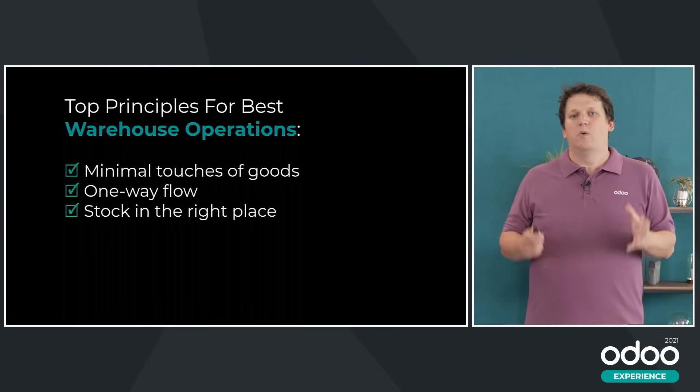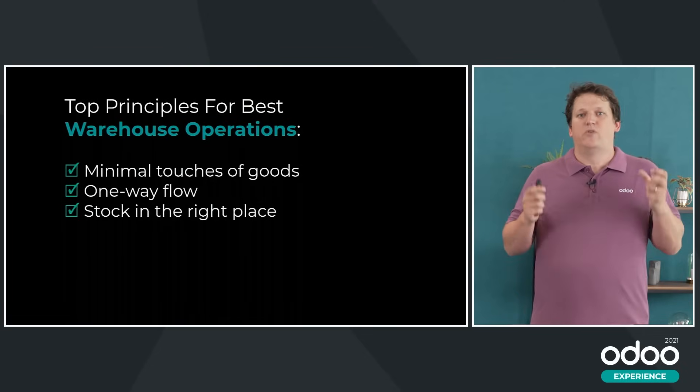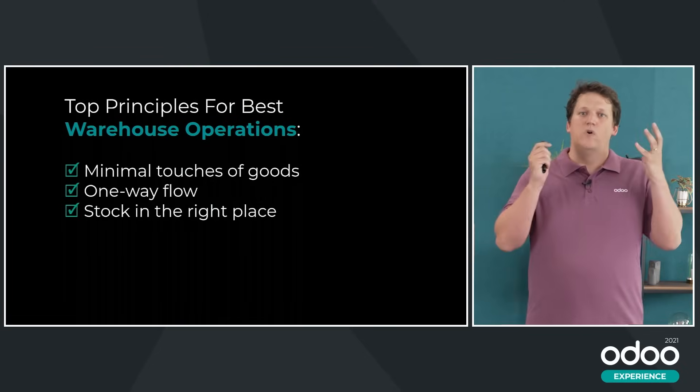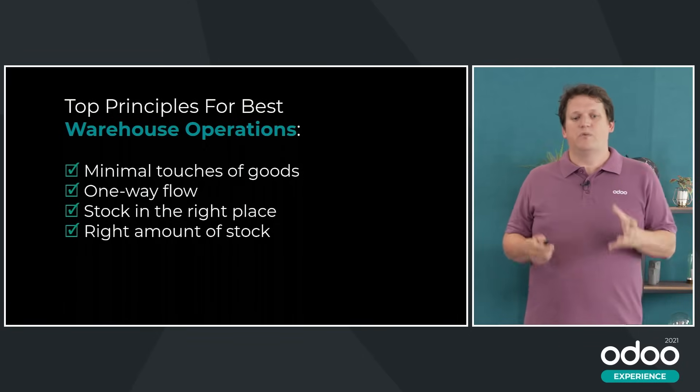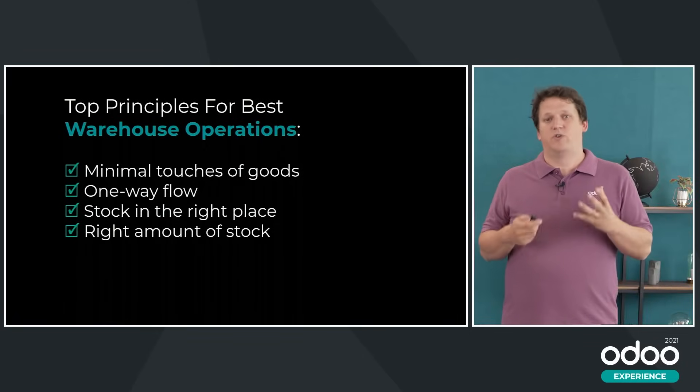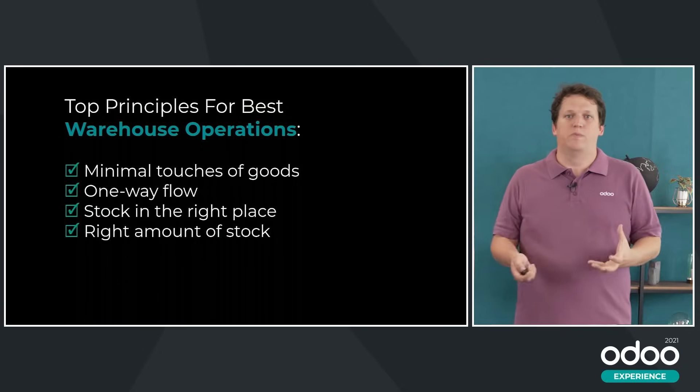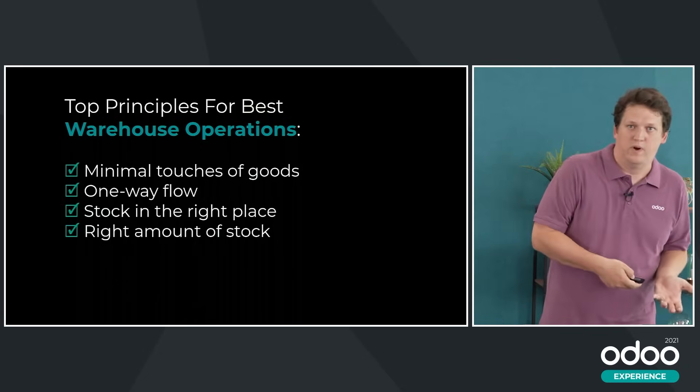Third, we want the stock in the right place. If you minimize errors, optimize where you store goods to reduce travel distance, and organize your warehouse better, you can save up to 20 to 30% of the time to operate your warehouse. Next, we want the right amount of stock — not too much, not too few. It's easy to replenish and you really have the right amount of stock in the right packaging method.